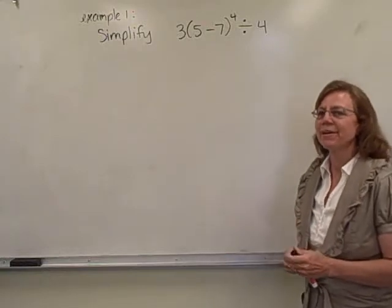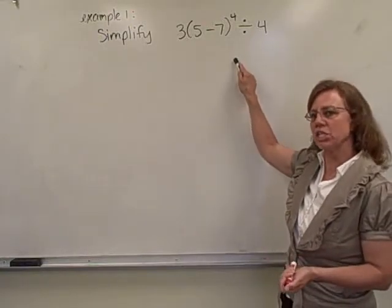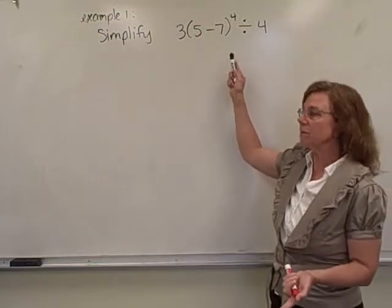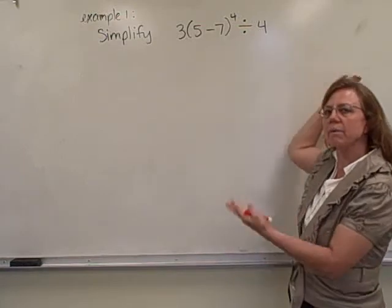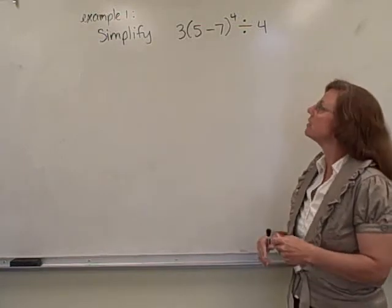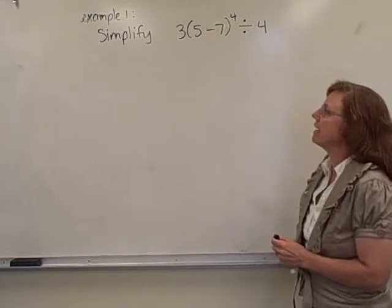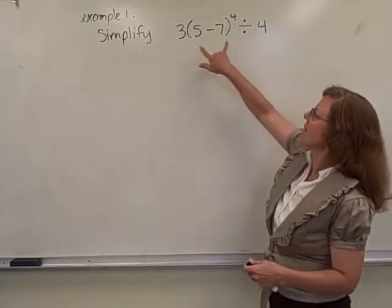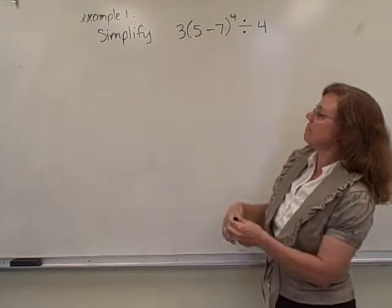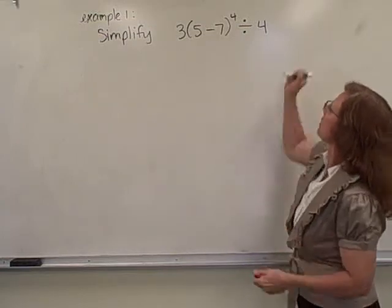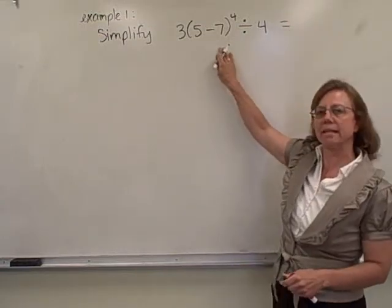For our first example, we're going to simplify this expression. Notice it's an expression because there's no equal sign with something else on the other side, so it's just an expression to simplify, and we're going to follow the order of operations. So we have some parentheses. Inside parentheses first, we are going to do 5 minus 7,